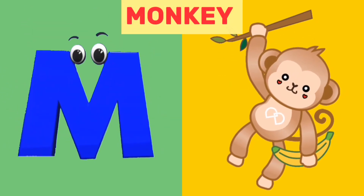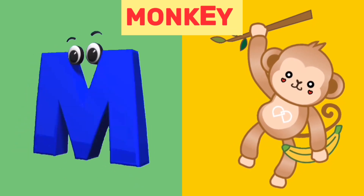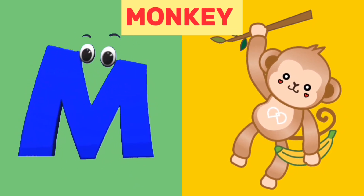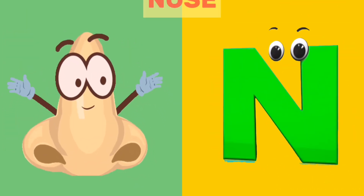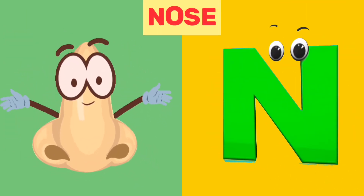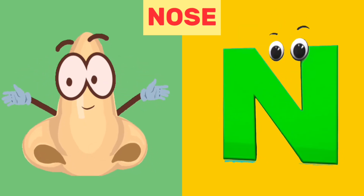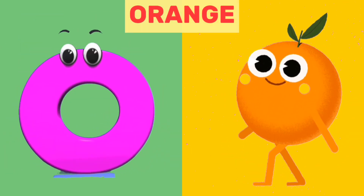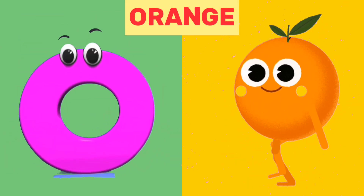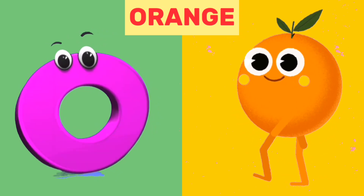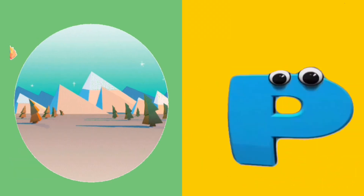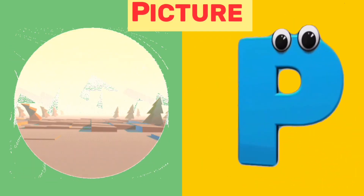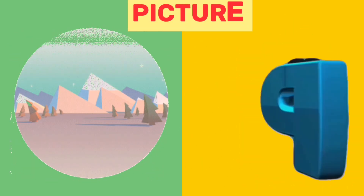M is for Monkey. M, M. Monkey. N is for Nose. N, N. Nose. O is for Orange. O, O. Orange. P is for Picture. P, P. Picture.